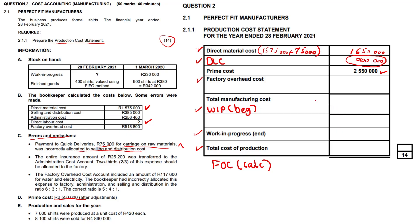What does the factory overhead cost look like at present? Going back to the question paper, direct labor cost has been computed already and we have a factory overhead cost of 518,800 rands given to us. So we start with that figure of 518,800.